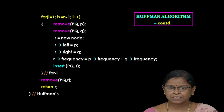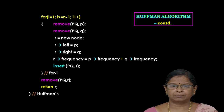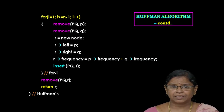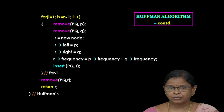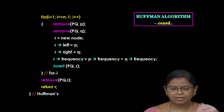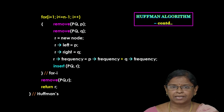Next, we move on to the processing section. The for loop is repeatedly executed n minus 1 times. In the first step, we remove the first two nodes from the priority queue. Then we create a new node whose frequency is the sum of the frequency of the first node (p) and the second node (q). Therefore, p->frequency plus q->frequency equals the new node's frequency.